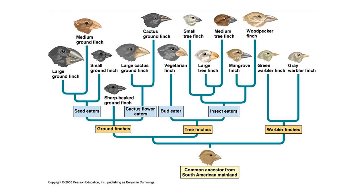Today, we recognise around 15 endemic species on the Galapagos Islands, from the abundant small ground finch to the critically endangered mangrove finch. Many of the species are similar in terms of their size, shape and colour, however there are several differences observable in their habitat, diet preferences and most notably their beak morphology.